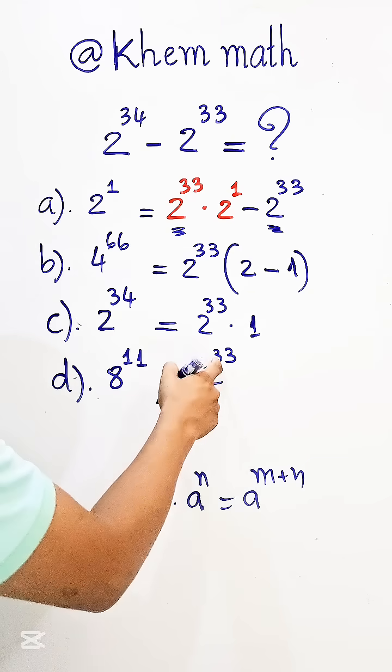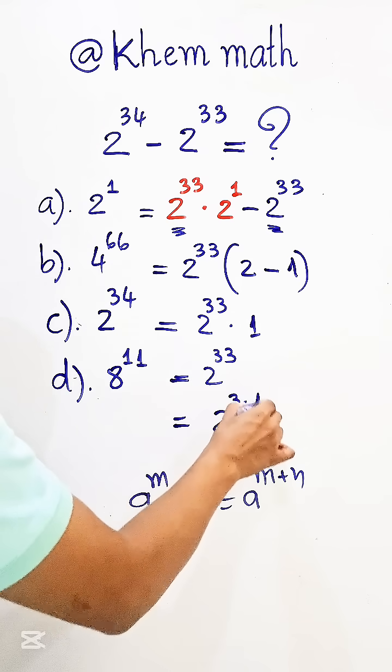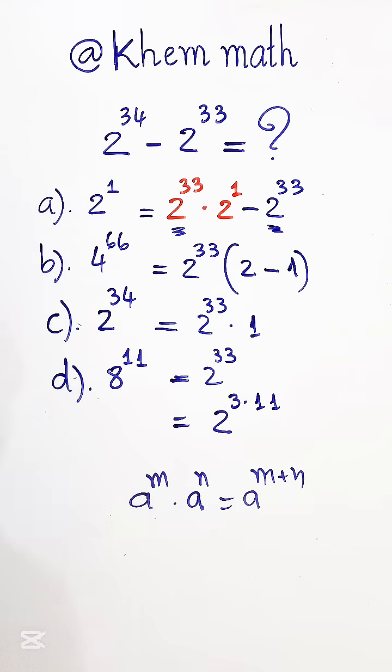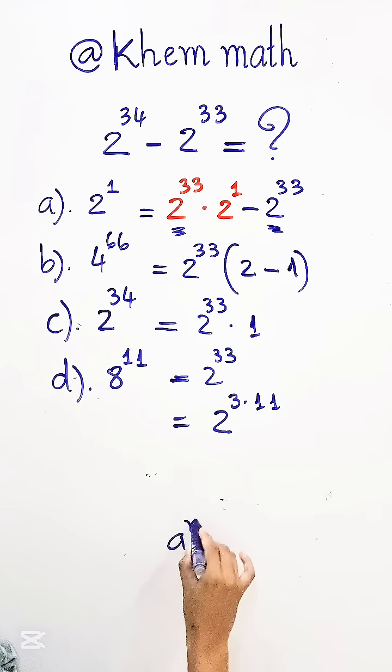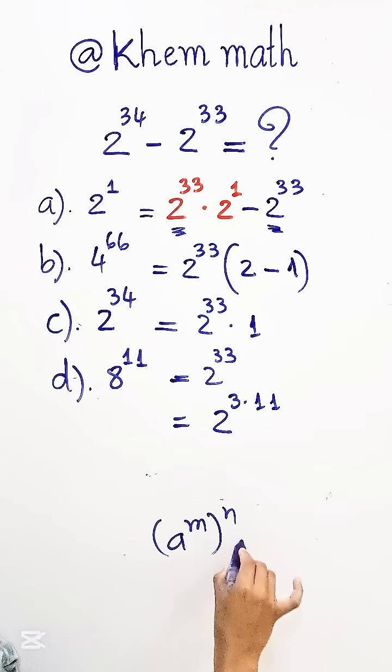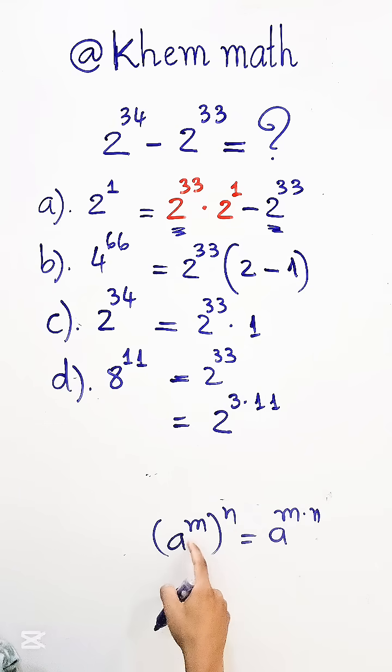This 2 to the power 33 can be written as 2 to the power (3 times 11). And here we use the formula: if a to the power m to the power n equals a to the power (m times n). So here we have the form, so we can write the form.